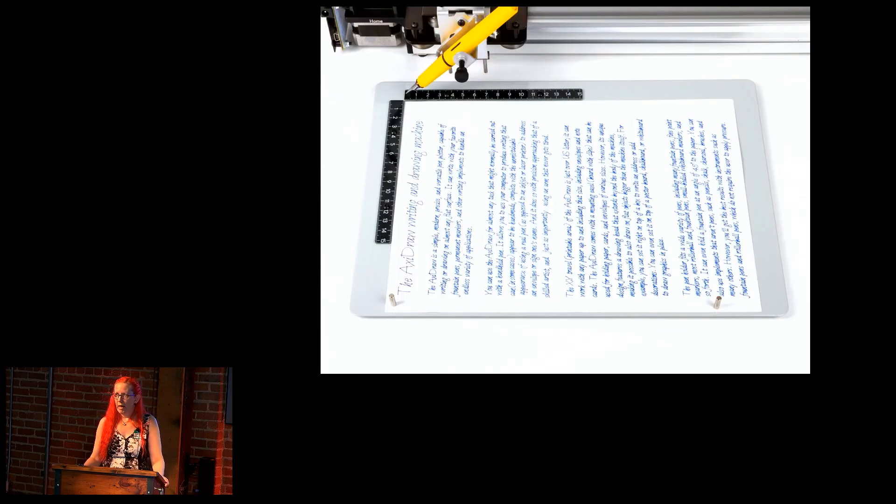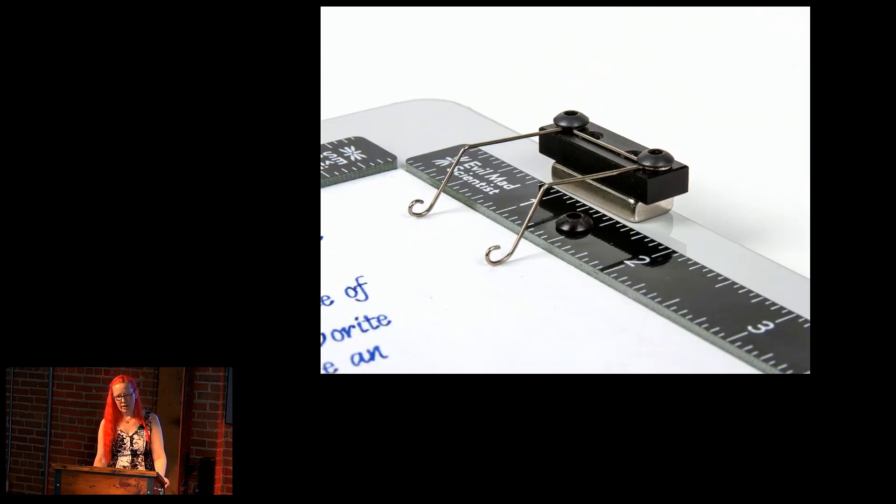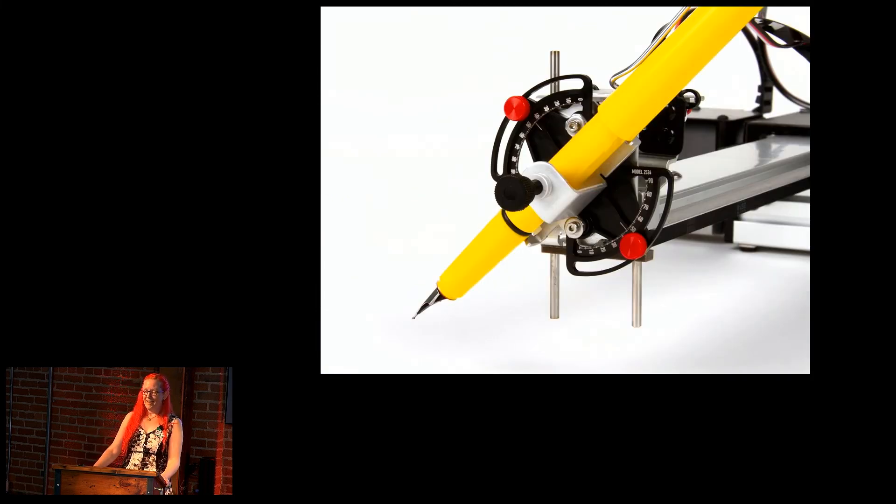Most recently, we came out with some magnetic easel boards for it. This one is the letter size with those fancy rulers on it. We've got some of the rulers in the back. If you didn't get one already, come by and grab a ruler. This is the A3 size. We also got to design some fancy magnets to hold the paper down. These are pretty cool. We got to use new technologies that we hadn't played with too much. CNC wire forming is really cool.